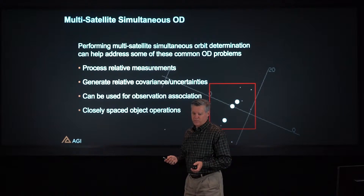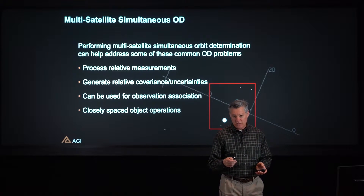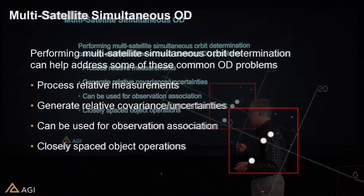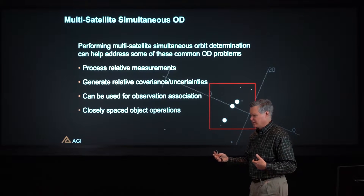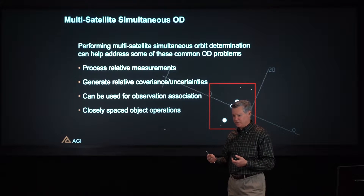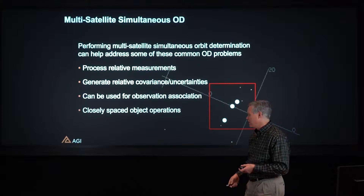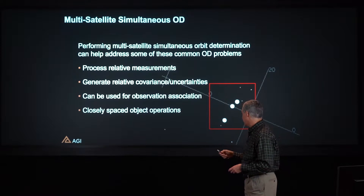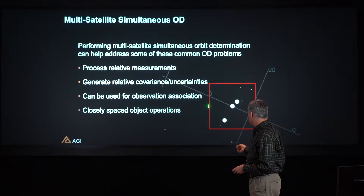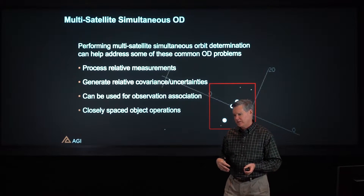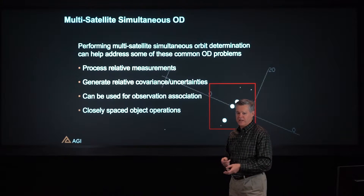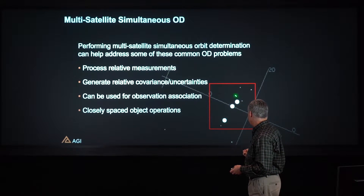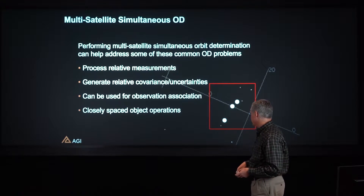Whenever we're doing multiple satellites at one time, we have the possibility that we're observing them simultaneously. There are a couple of different ways: one is through direct satellite-to-satellite observation, where both satellites are involved in the observation — one typically taking the observation of the other. Another possibility is that the satellites are within the same field of view of a particular instrument. We see this a lot with geostationary satellites flying in a cluster, which may be in the same field of view of an optical instrument used to track those satellites.